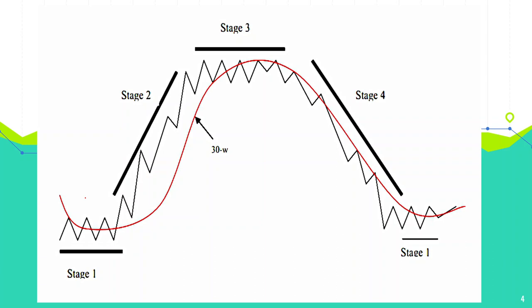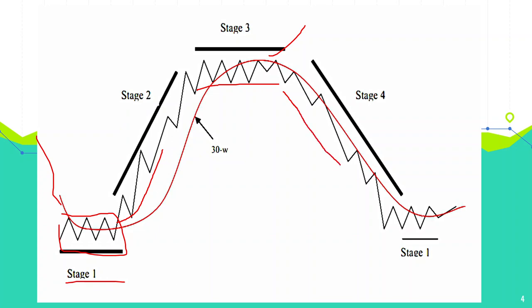This is the basic diagram of the four-stage analysis by Stan Weinstein. Stage one is called the basing stage, where the stock consolidates in a range after a downtrend. After a good downtrend, at one point the stock stops falling and starts consolidating. Then the stock breaks out and moves upward. Then comes the stage where the stock again consolidates, but this time it reverses, gives a breakdown, and the move continues on the downside.